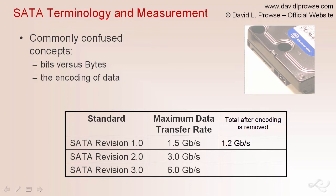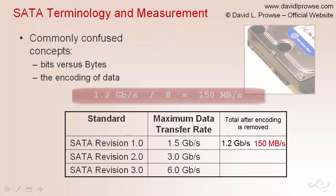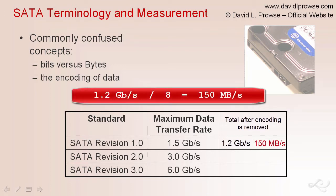So you have 1.5 gigabits total, minus 0.3 gigabits of encoding data, leaving 1.2 gigabits of real data. If you want to find out how much you can actually store on the drive, you can calculate it: divide by 8 to solve for bytes, and you get 150 megabytes per second. As shown in this equation: 1.2 gigabits per second divided by 8 equals 150 megabytes per second. We're solving for bytes to show the actual amount of data that can be written to the hard drive per second.